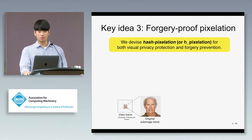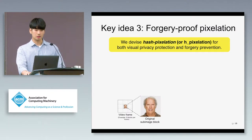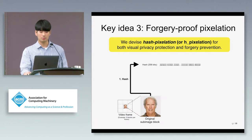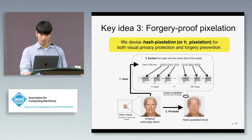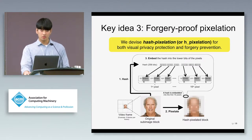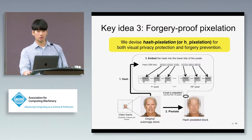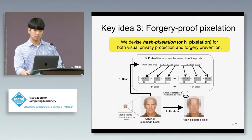Given an original sub-image block, the HPixelation procedure is as follows: hash the sub-image block, pixelate it, then embed the hash into the pixelated sub-image block. To avoid visual jarring, we distribute a 256-bit hash into the lower 16 bits of the first 16 pixels in the pixelated sub-image block.